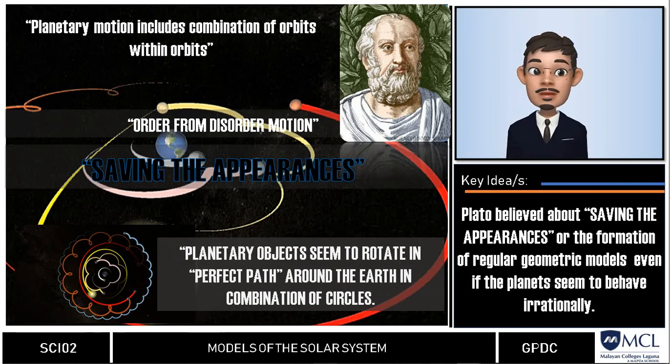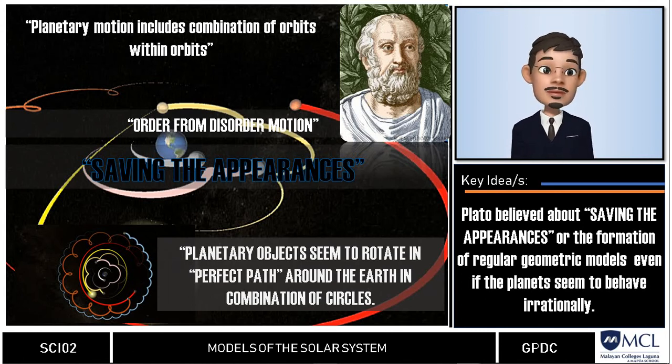Thus exhibit irregular patterns of motion throughout the year. He then called these wandering stars as planets, planets that move in uniform and organized manner orbiting the earth in combination of circles.